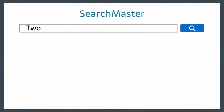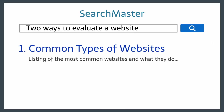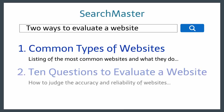In this video, I'll go over two ways to evaluate a website. One way is to know what type of website you found — I'll list the most common types of websites and describe what they do. Another way to evaluate websites is by applying a set of ten questions to judge the accuracy and reliability of the site.